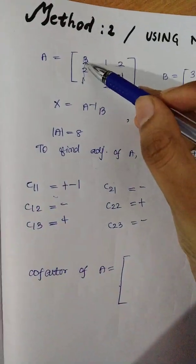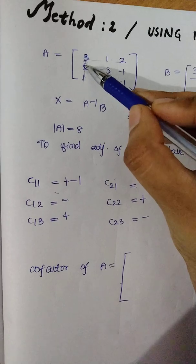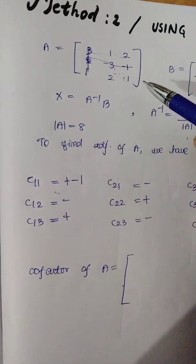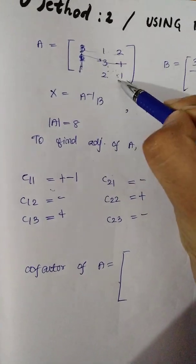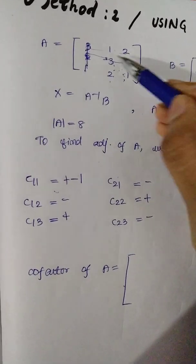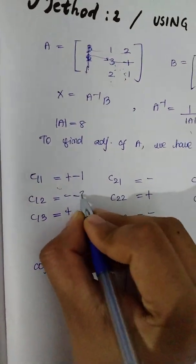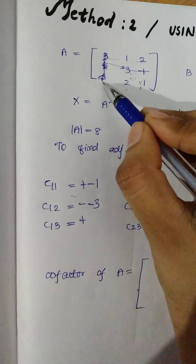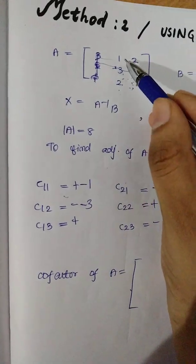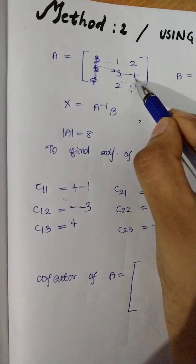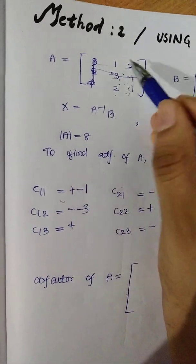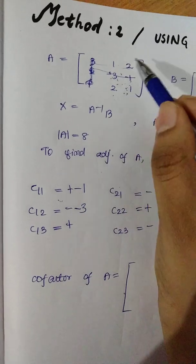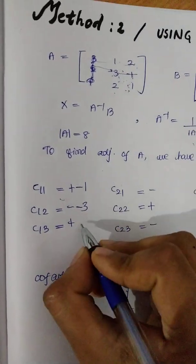Let's take this. I am going to write C12. Here we have the rule: 1 into 1 minus 2 into 2, that is 1 minus 4 equals minus 3. The rule is C13: 1 into minus 1, minus minus 3 into 2, then minus 1 plus 6 equals 5.